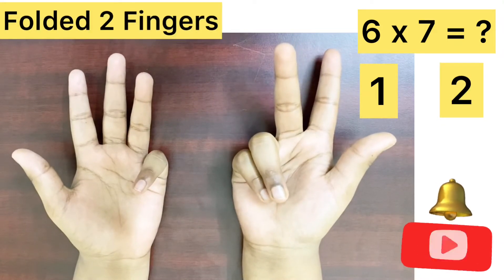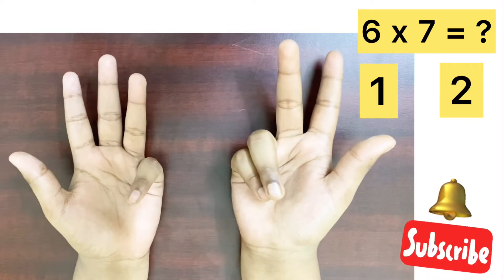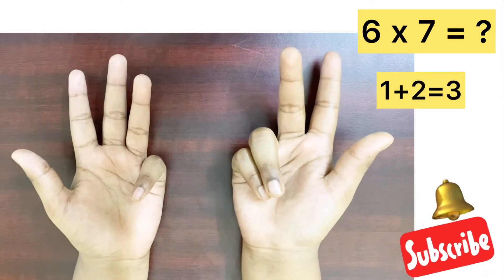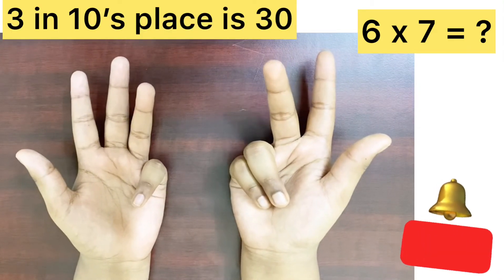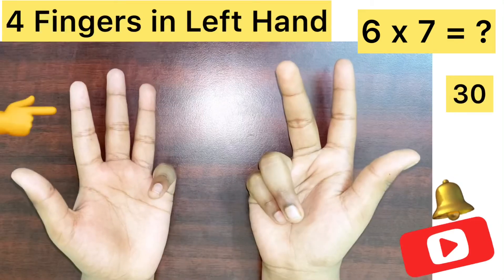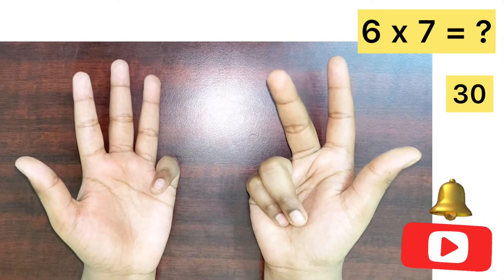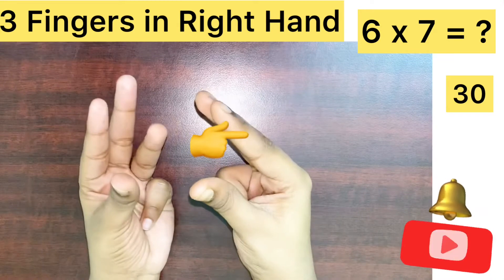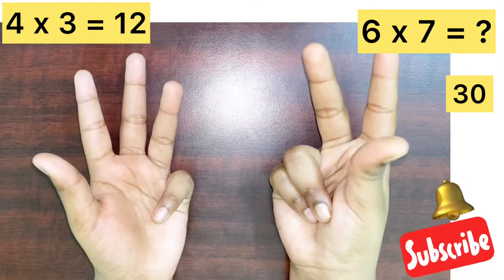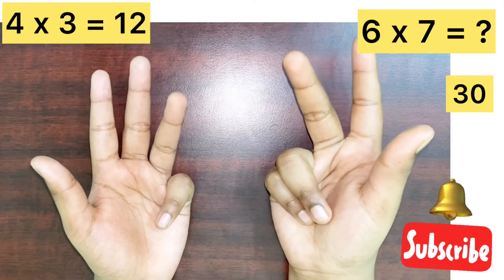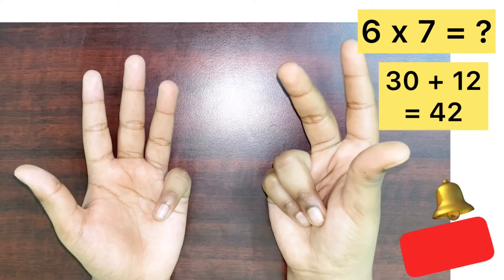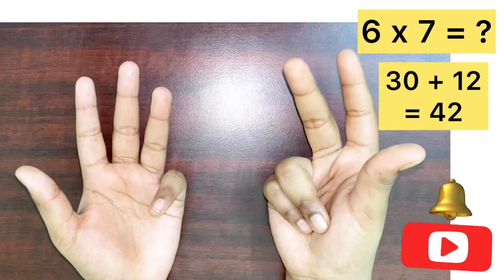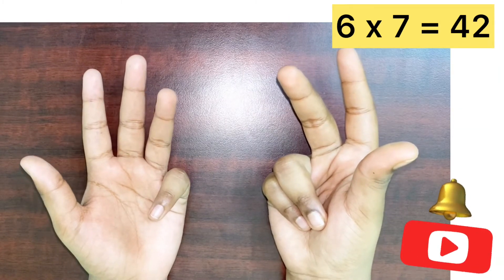Count your folded fingers from both of your hands together. Here that is 3. Keep the 3 in 10's place. So, it is 30. Now, multiply both hands unfolded fingers with each other. 4 multiplied by 3 equals 12. Now, add both the hands together. 30 plus 12. So, the answer is 42.